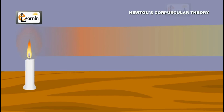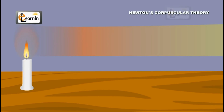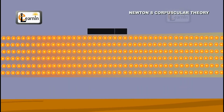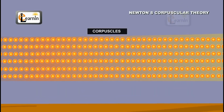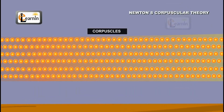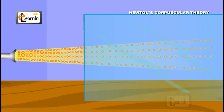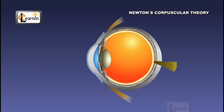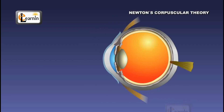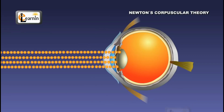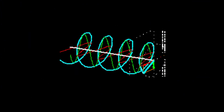Newton proposed the corpuscle theory of light, according to which light is made up of small, discrete particles which travel in a straight line and possess finite velocity. This early conception of the particle theory of light was an early forerunner to the modern understanding of the photon.